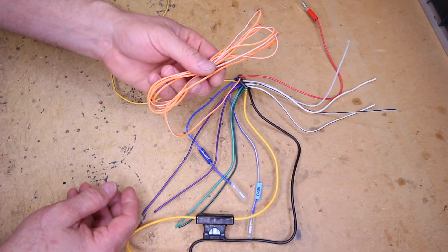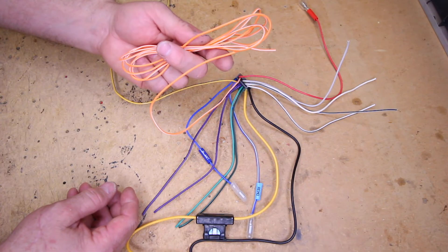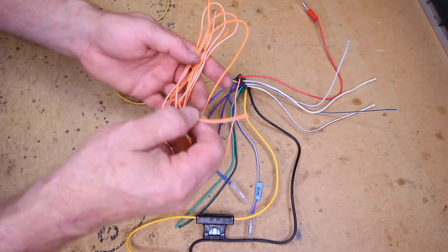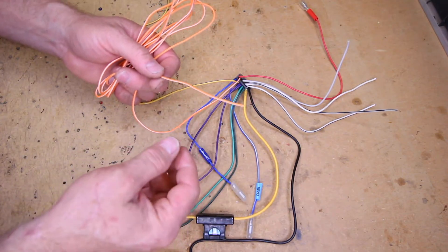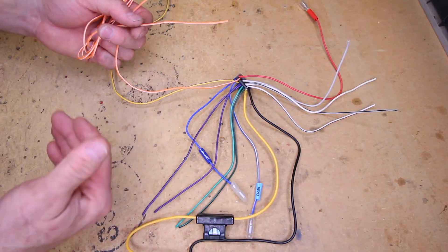Alpine doesn't do that. Alpine uses orange white as the reverse wire input. This is what you're going to hook up to the reverse lights in order to trigger the radio to go into reverse.